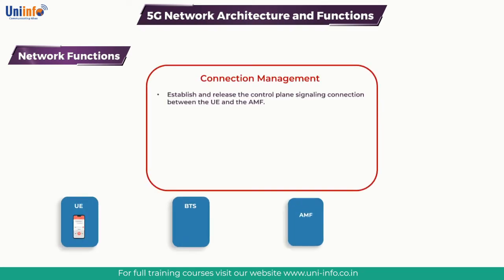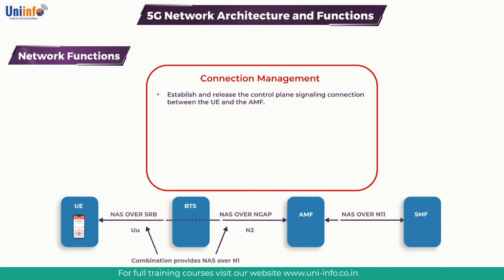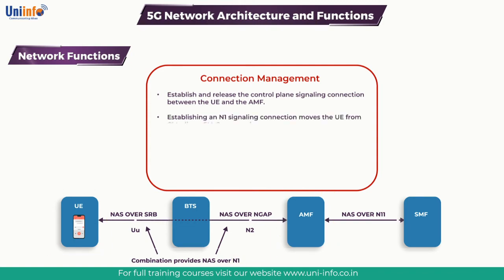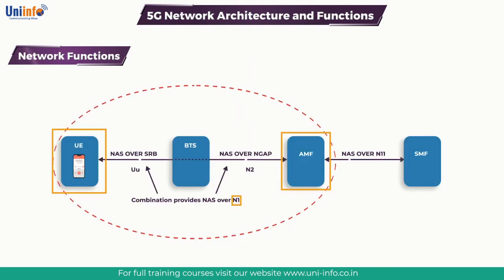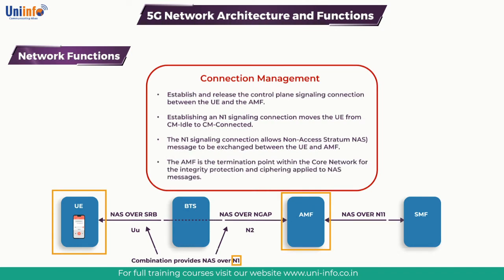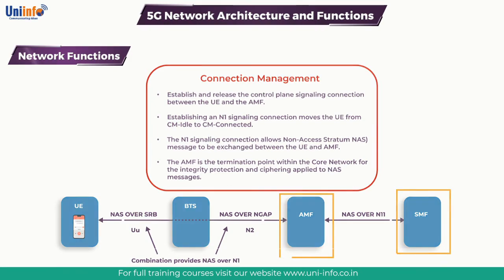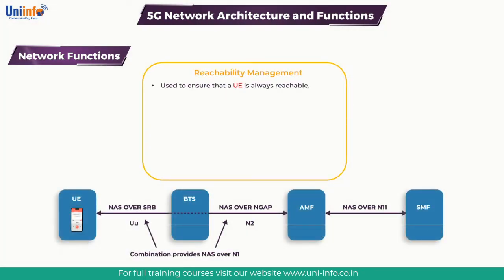Connection management is used to establish and release the control plane signaling connection between the UE and the AMF across the N1 interface. Establishing an N1 signaling connection moves the UE from CM-IDLE to CM-CONNECTED. The N1 signaling connection allows Non-Access Stratum (NAS) messages to be exchanged between the UE and the AMF. The AMF is the termination point within the core network for the integrity protection and ciphering applied to NAS messages. The termination point for NAS signaling procedures can be either the AMF or the SMF.